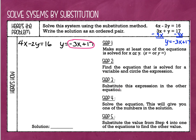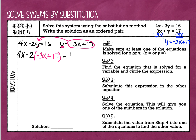Step three: we're going to substitute this expression — the one I just circled — into the other equation. This expression is what y is equal to. So I'm going to find the y in my other equation and substitute this whole value in right there. I'm going to rewrite the equation: 4x comes down, minus 2 comes down, and instead of that y, I'm going to replace it with negative 3x plus 17, then bring down equals 16. By doing that, this equation now only has one variable — instead of having an x and a y, now it only has x's.